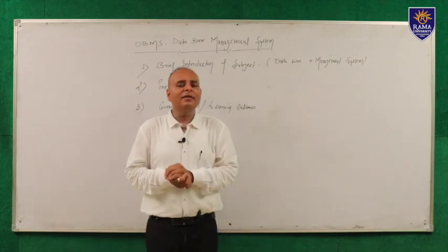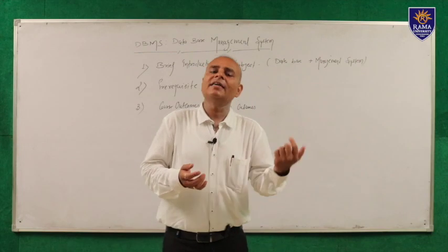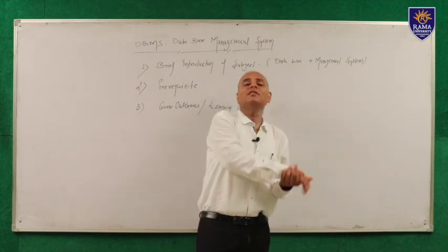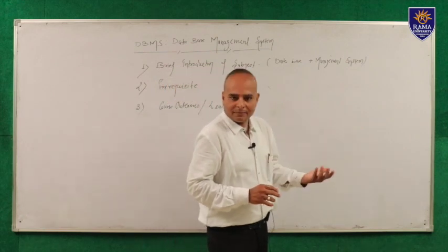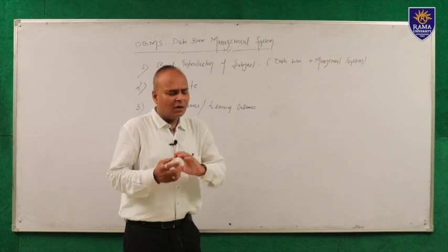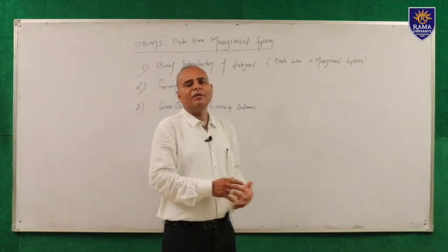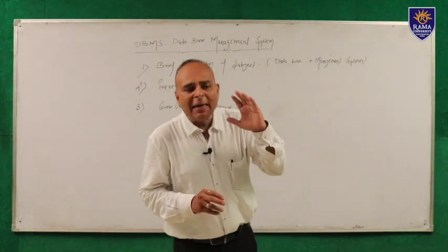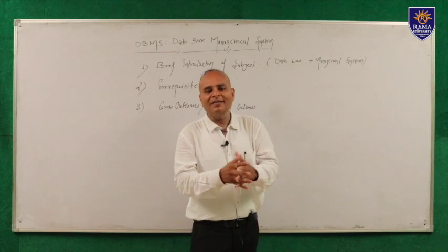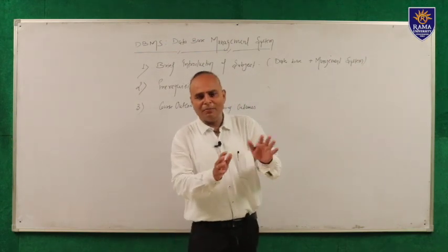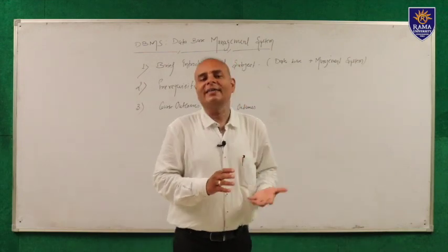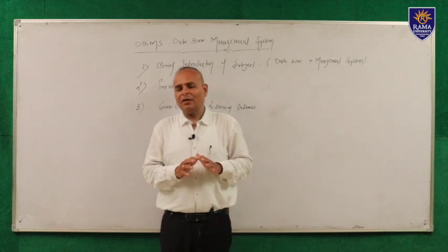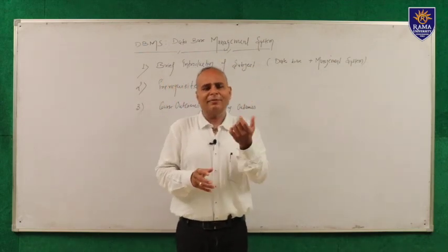The student will be able to design an ER diagram — ER diagram means Entity Relationship diagram. We will discuss this in detail later. But the student will be able to design an ER diagram and transform it into a database, no matter which software you are using. The student will also be able to understand the basic concept of normalization. What is normalization? We will discuss this later. The student will be able to normalize a database — meaning to make a database that acts normally under any conditions and does not have many anomalies. We will also discuss anomalies later.